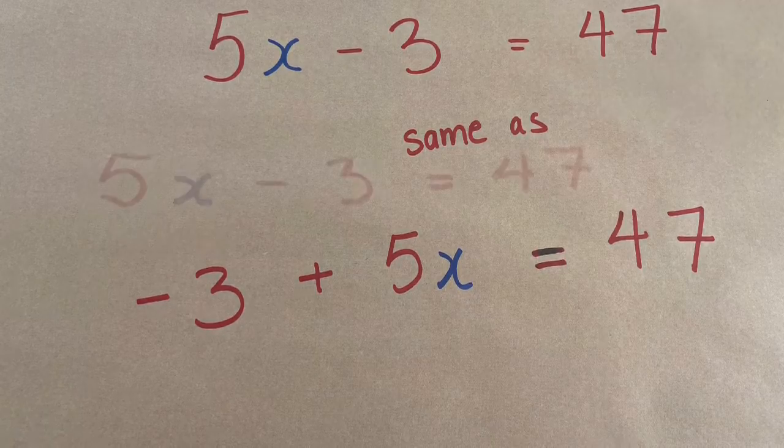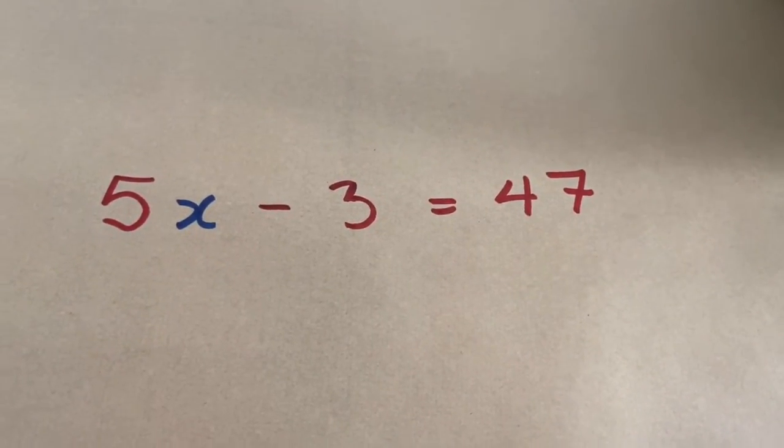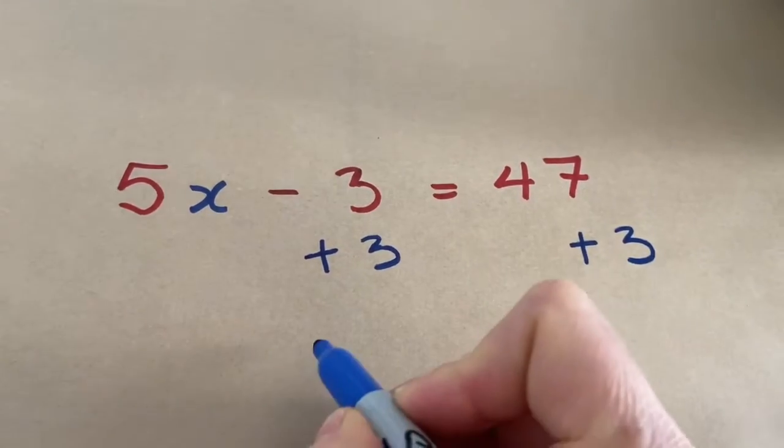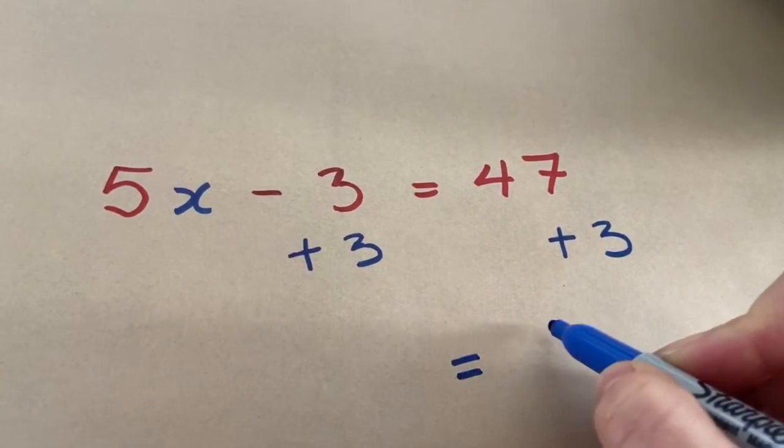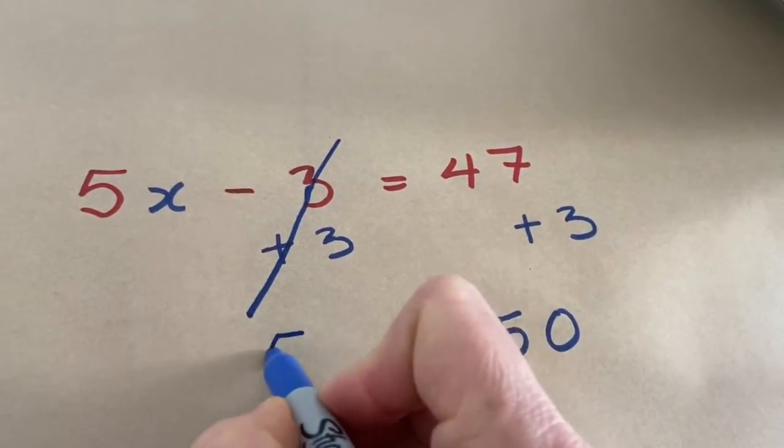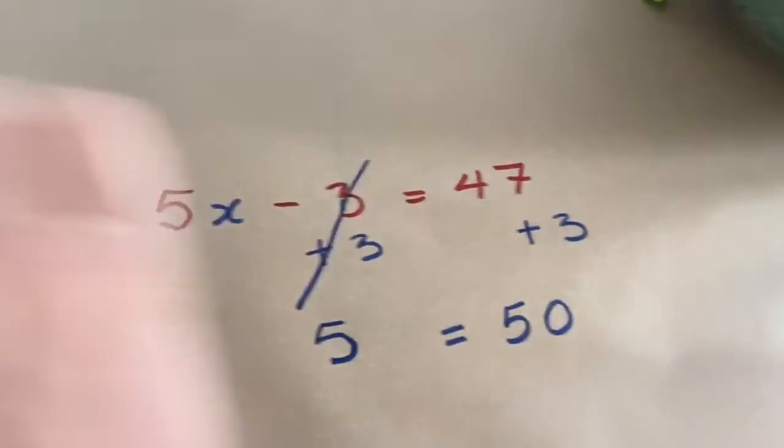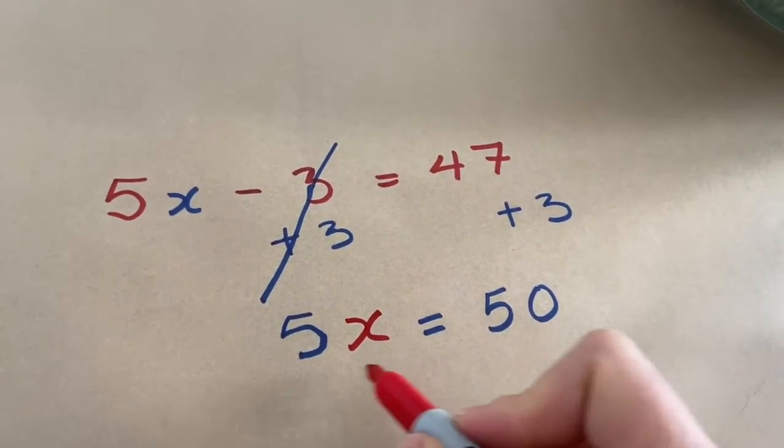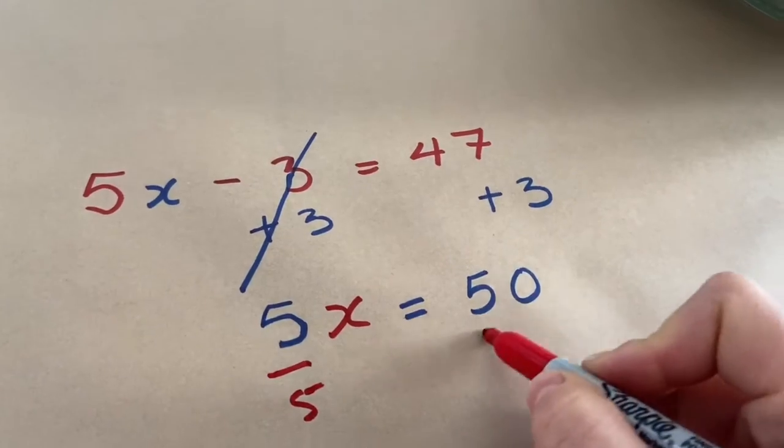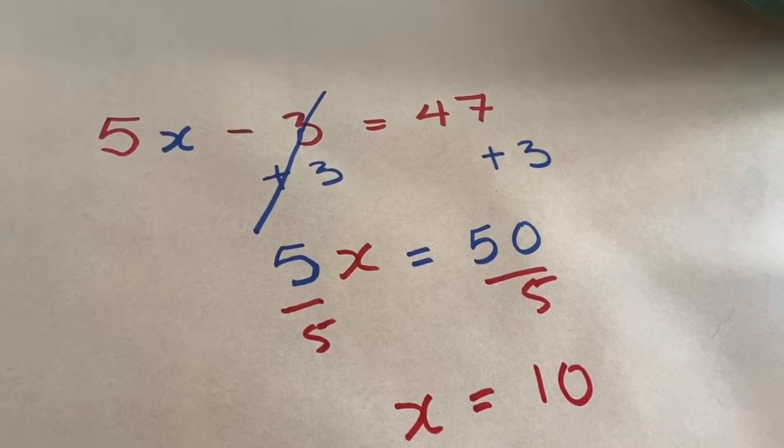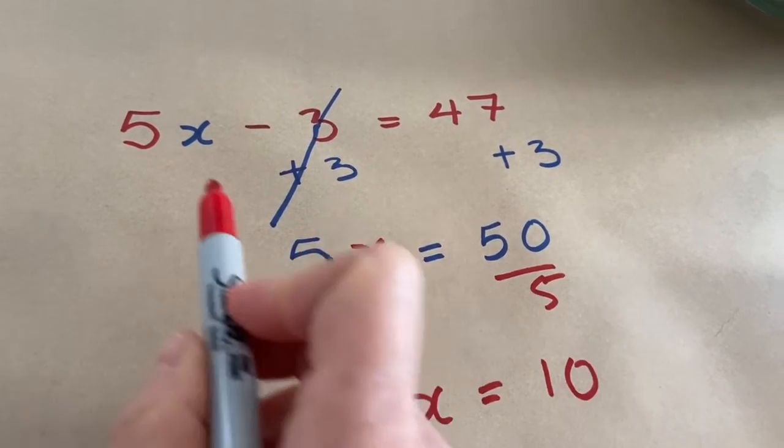When I did this question yesterday, I just added 3 here and added 3 here, so that means I got 50, these cancel out, and I had 5x. And then all I did was I divided by 5, and so x was equal to 10. I was undoing the things I had done to the x.